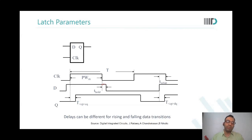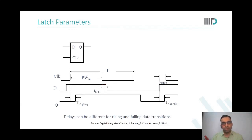What do you understand by sampling? We have looked at two or three examples just now — what do you capture about sampling? To me, it seems that if any changes in the input at the D end — if my flop is able to capture that — that is called the sampling edge.